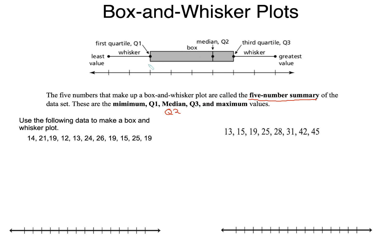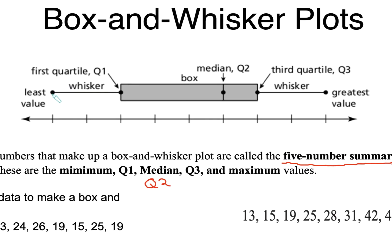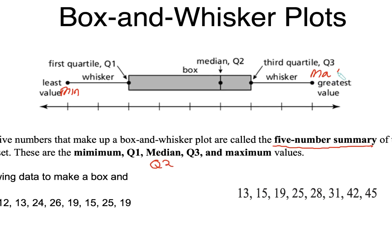Up here is an example of a box and whisker plot. Our least value is what we call our minimum. The line from the minimum to Q1, which is our first quartile, is called a whisker. Q1, your first quartile, is the median of the lower half of your data set. Here's our median, which we call Q2, the second quartile — that's basically dividing your data in half, finding the median of the entire data set. Over here we have Q3, your third quartile, which is the median for the upper half of your data. And the greatest value is your maximum value.